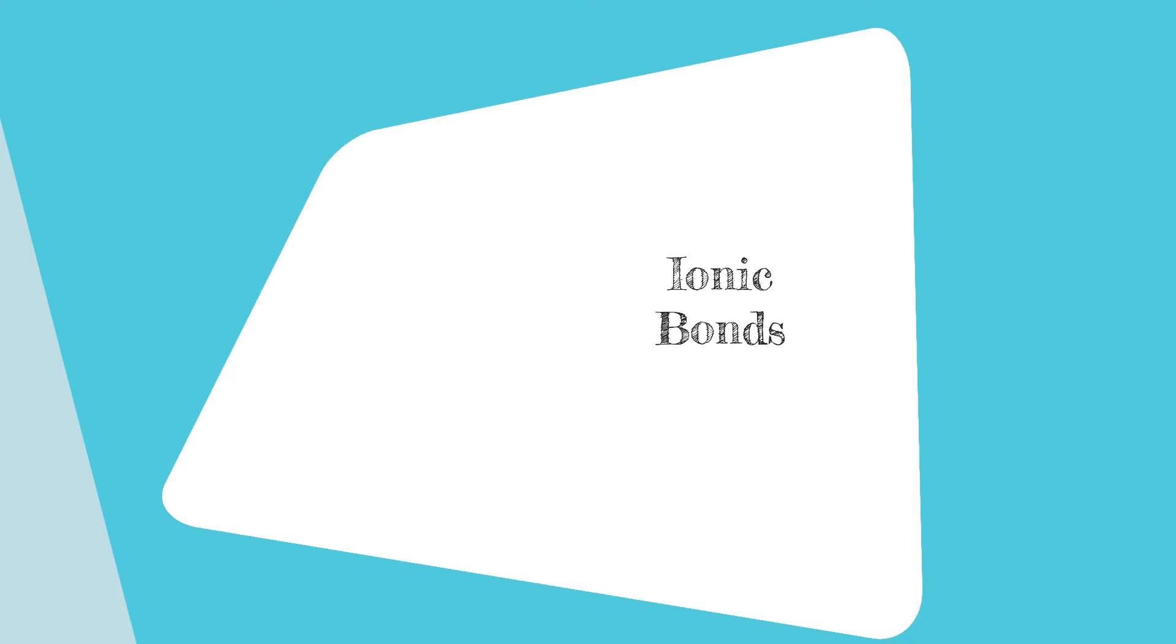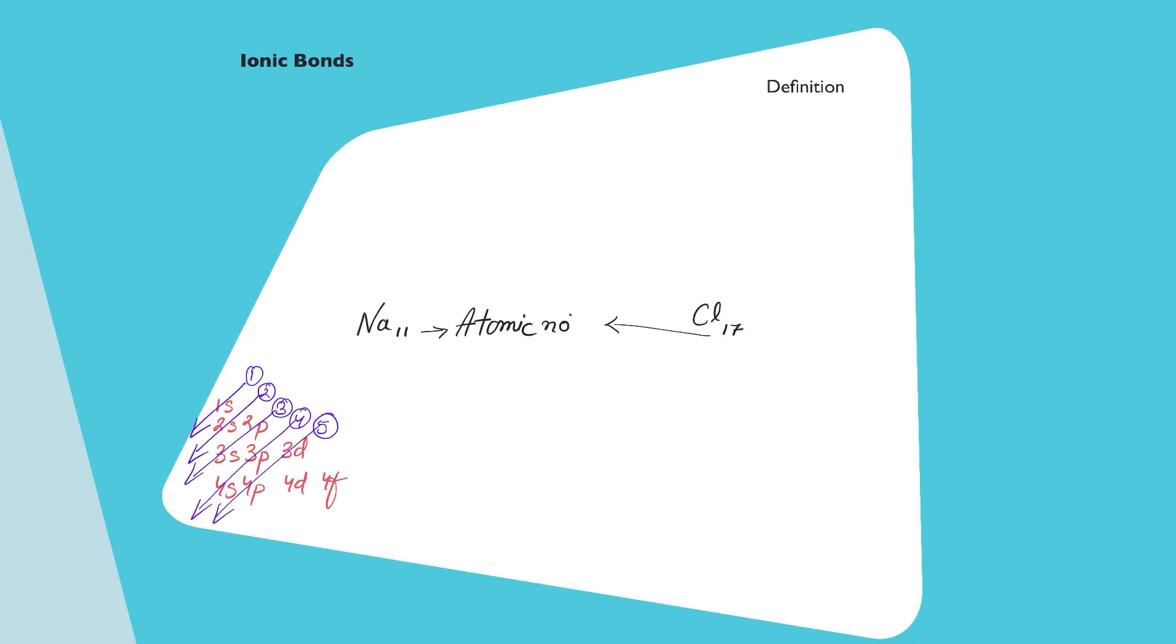Hey guys, so today we are going to try to understand ionic bonds. So what is an ionic bond? An ionic bond is formed by transfer of electrons. So that is the key definition of ionic bonds.